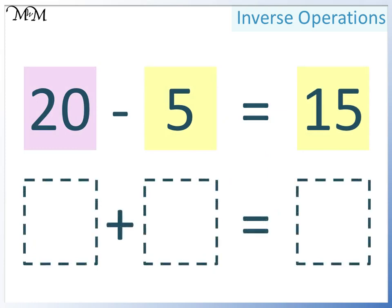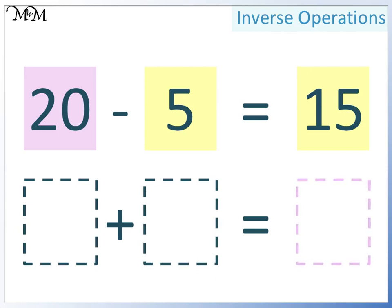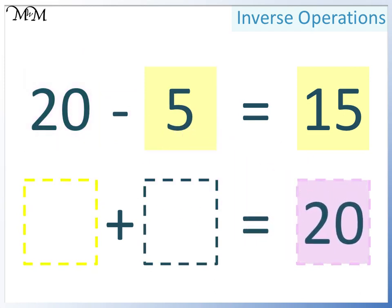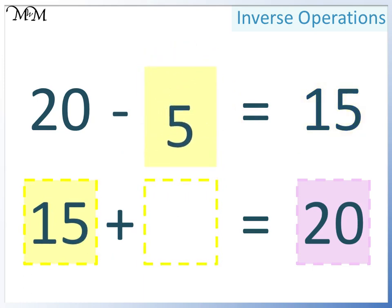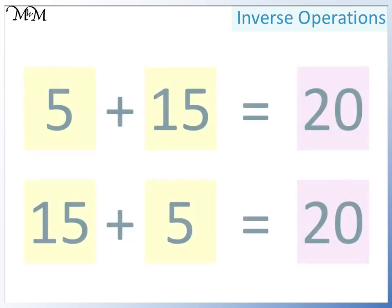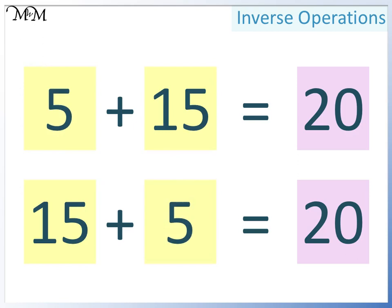Here is another way that we can write this as an addition. Two smaller numbers add to make a larger number. Our biggest number is 20, so again it goes here. In this space we can have either of the two smaller numbers — this time we will have 15, and so in this space we must have 5. So the two calculations that we have are 5 plus 15 equals 20 and 15 plus 5 equals 20. Again, the two smaller numbers can be written in any order — they both add together to make a larger number, which is 20.